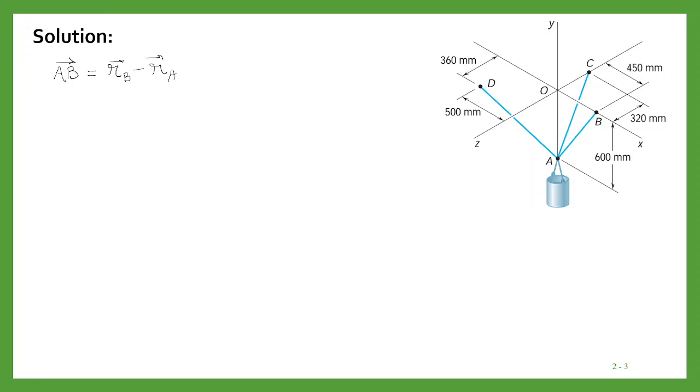For solving this problem, we need to write AB. AB will be the position vector of B minus the position vector of A. This is your origin, and this is B. The x-coordinate of B is 450.